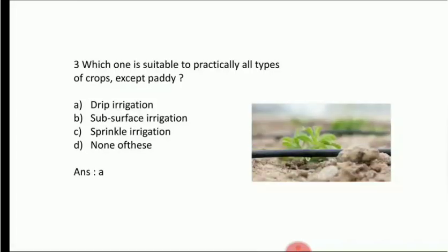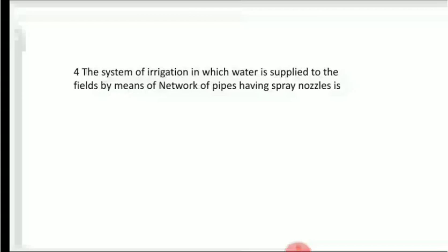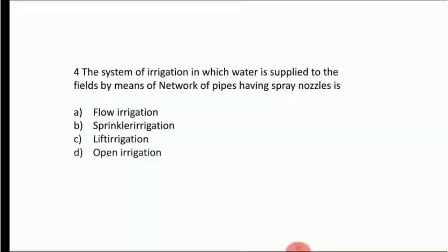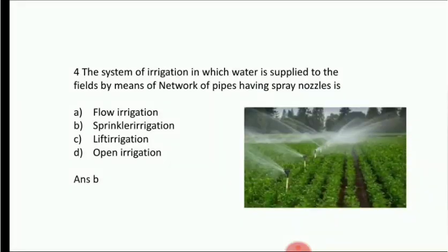System of irrigation in which water is applied to the fields by means of a network of pipes having spray nozzles — Option A: flow irrigation, Option B: sprinkler irrigation, Option C: lift irrigation, Option D: open irrigation. Answer is sprinkler irrigation. Sprinklers spray nozzles creating a rain effect. Sprinkler irrigation efficiency is 80%. Drip irrigation and subsurface irrigation efficiency is almost 90%.